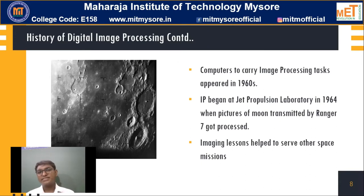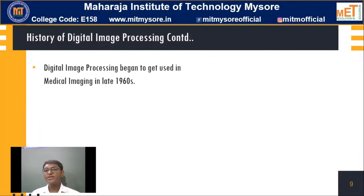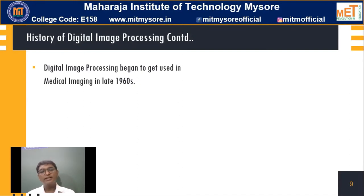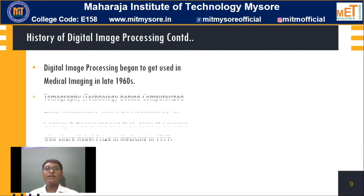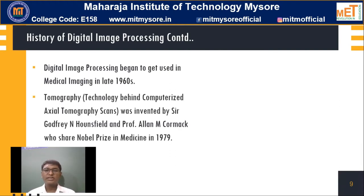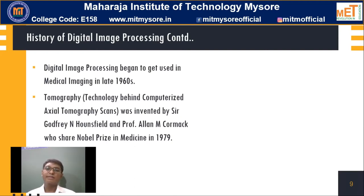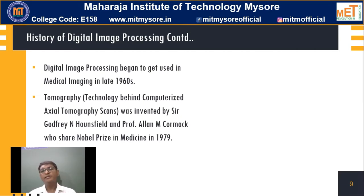This was in the year 1964. Later, in the late 1960s and early 1970s, digital image processing began to get used in medicine as well. One scanning system was invented called tomography — the technology behind computerized axial tomographic scans. This tomography was invented by Godfrey Hunsfeld and Professor Alan M. Cormack, who shared the Nobel Prize in Medicine in 1979.